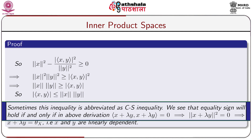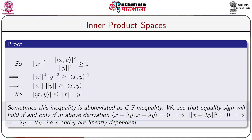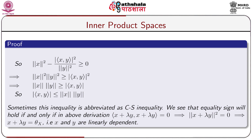We see that the equality sign holds if and only if ⟨x + lambda·y, x + lambda·y⟩ = 0, which implies norm of x + lambda·y squared equals 0, which implies x + lambda·y = theta, meaning x and y are linearly dependent.